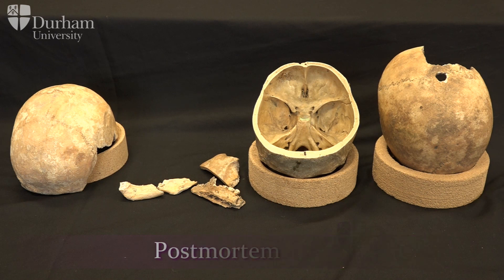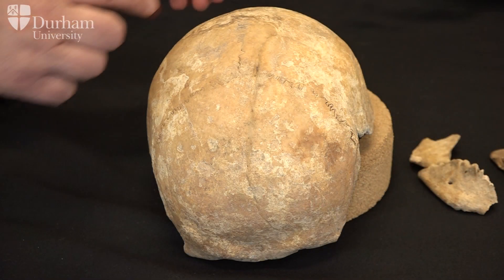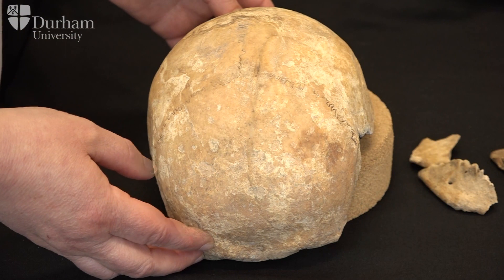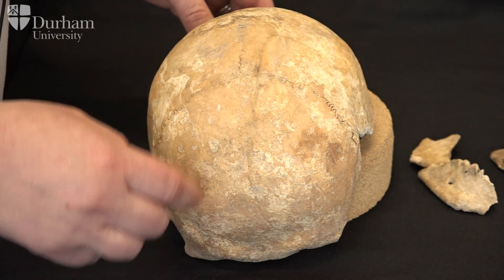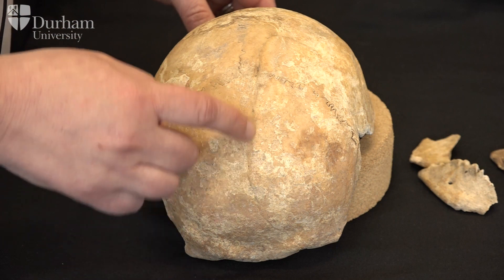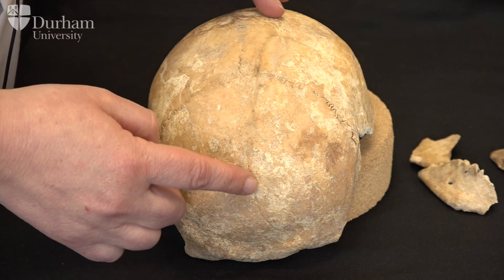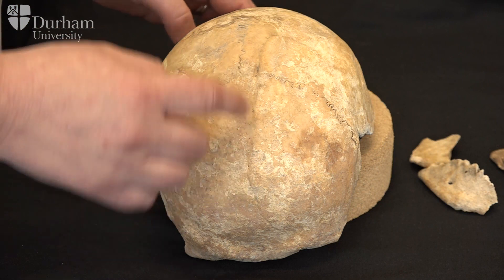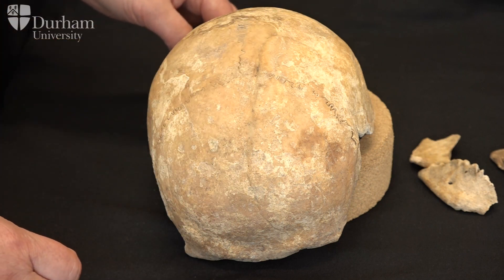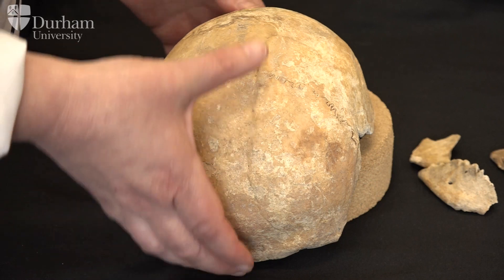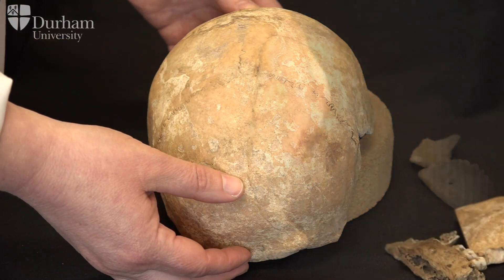Here we have an example of ante-mortem trauma. You can see that at some point in this individual's life they sustained quite a large injury to their skull - it's quite lengthy, but very well healed. It looks like it might have been caused by sharp force trauma such as a blade, but either way it's very well healed and it's very difficult to make out the margins of that injury.